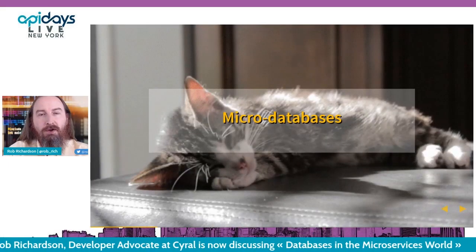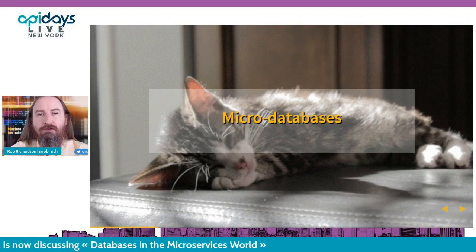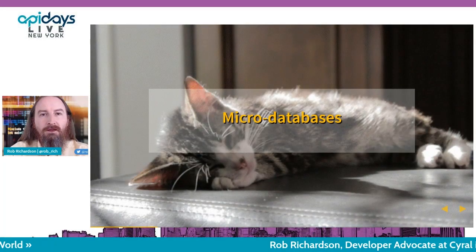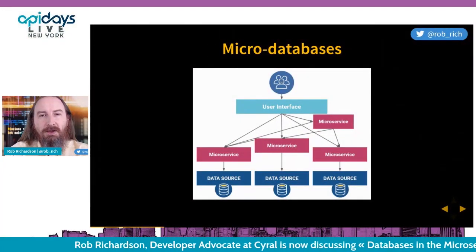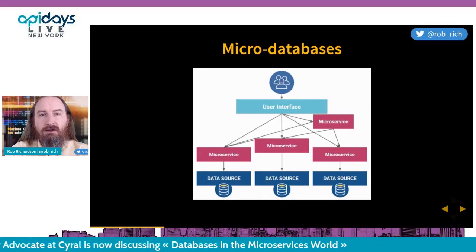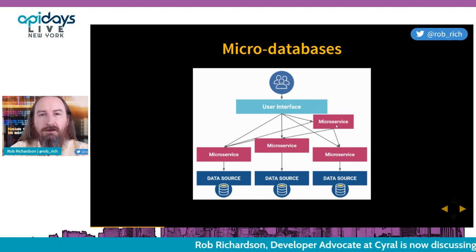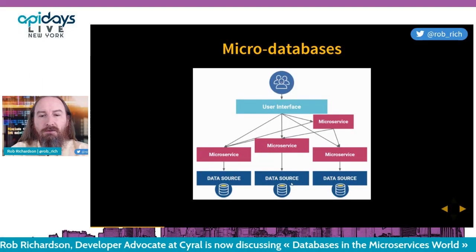When we get to the point where we have enough automation to automatically enroll our databases in authentication strategies and backup strategies, we can get to what I'll coin 'micro databases.' A micro database is the database owned by a microservice. A microservice may have one or more micro databases, or it may have none — if it doesn't require storing state, it simply doesn't have a micro database at all.